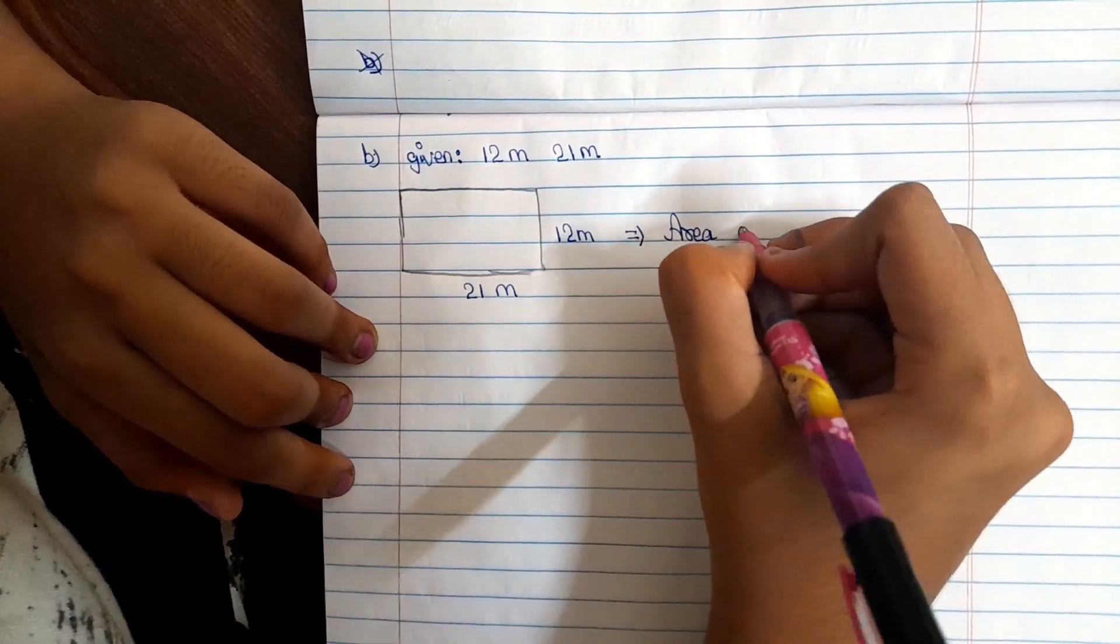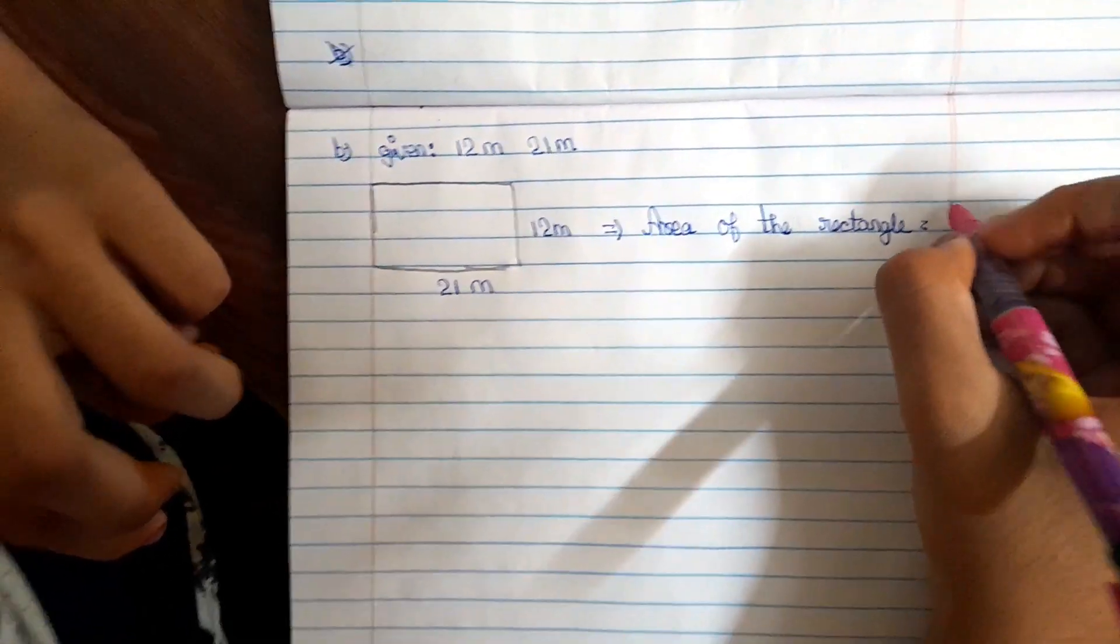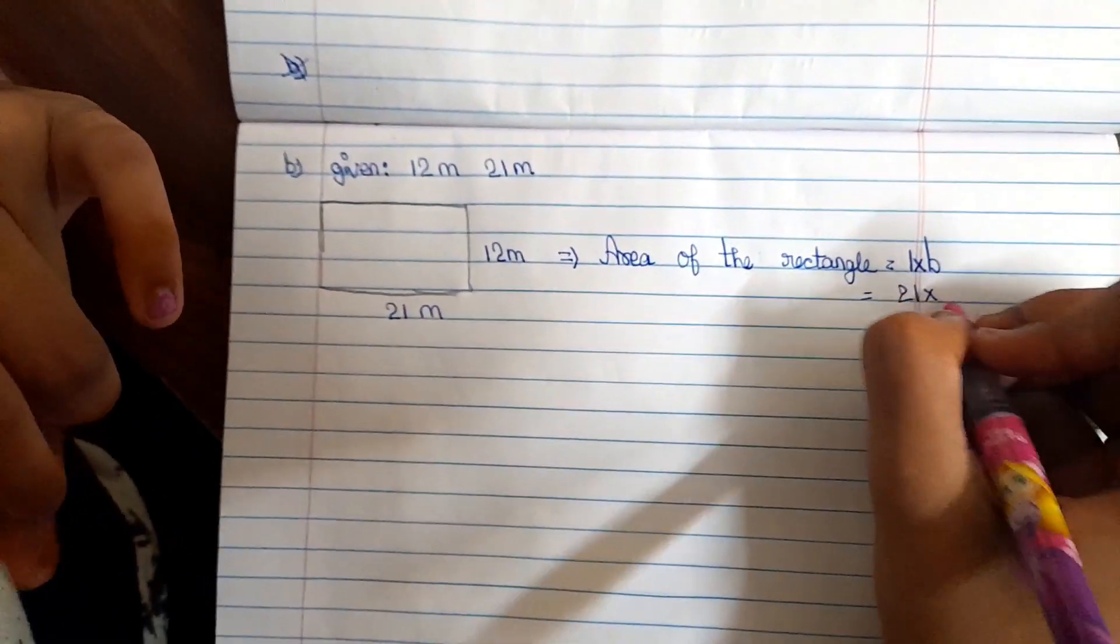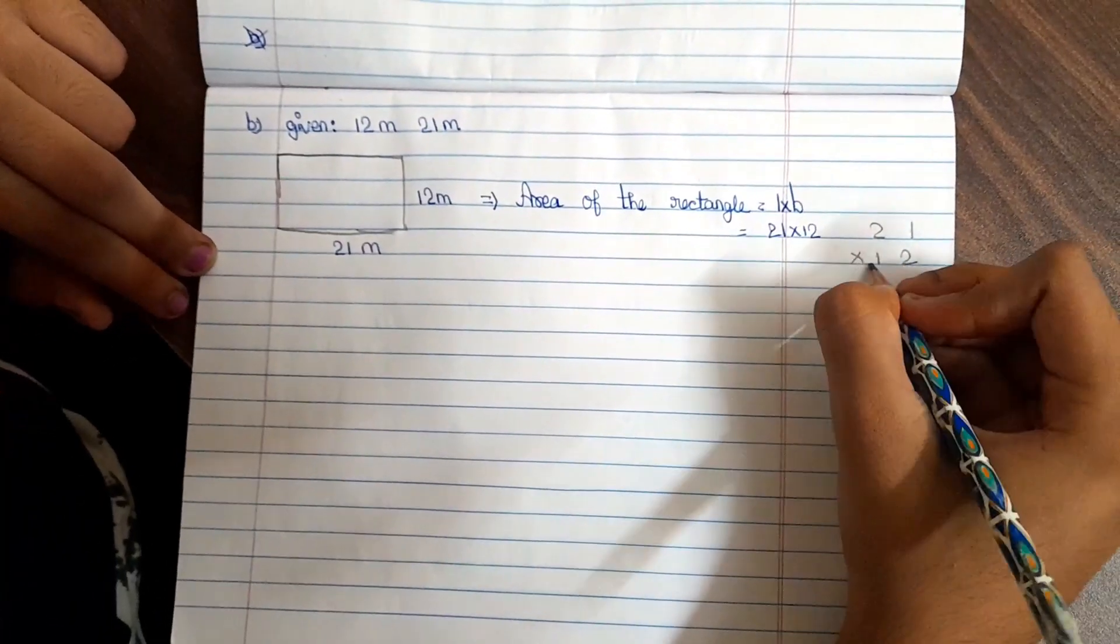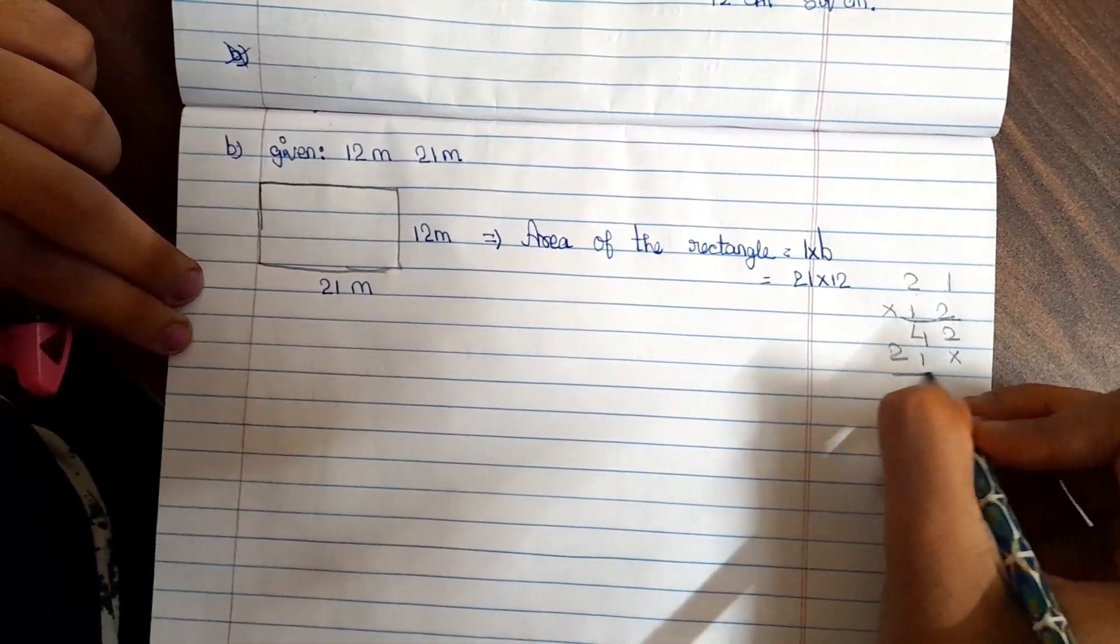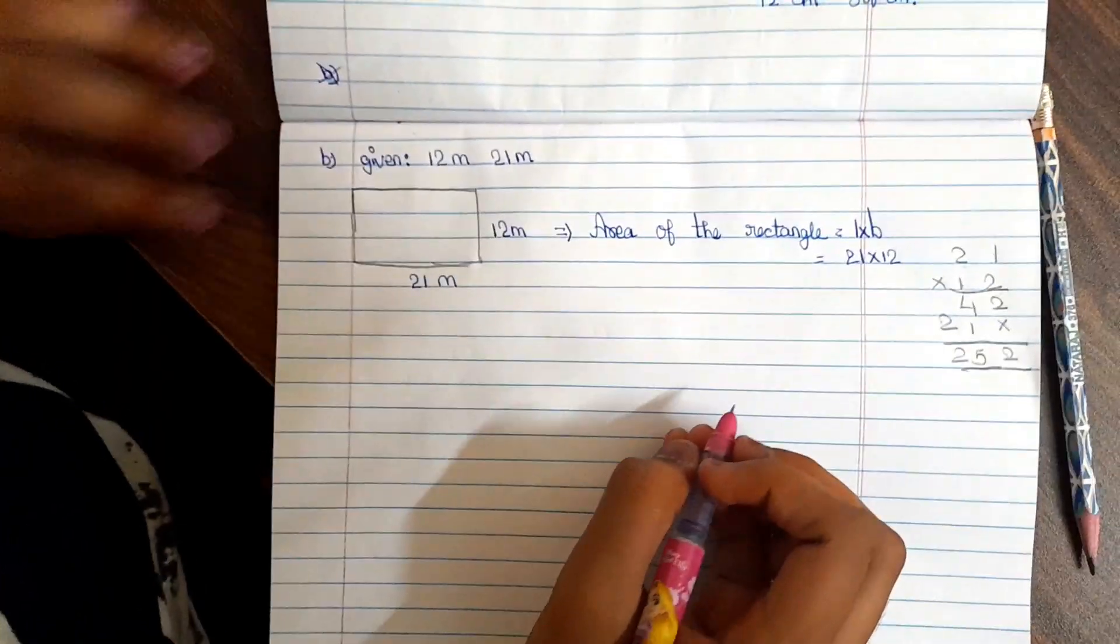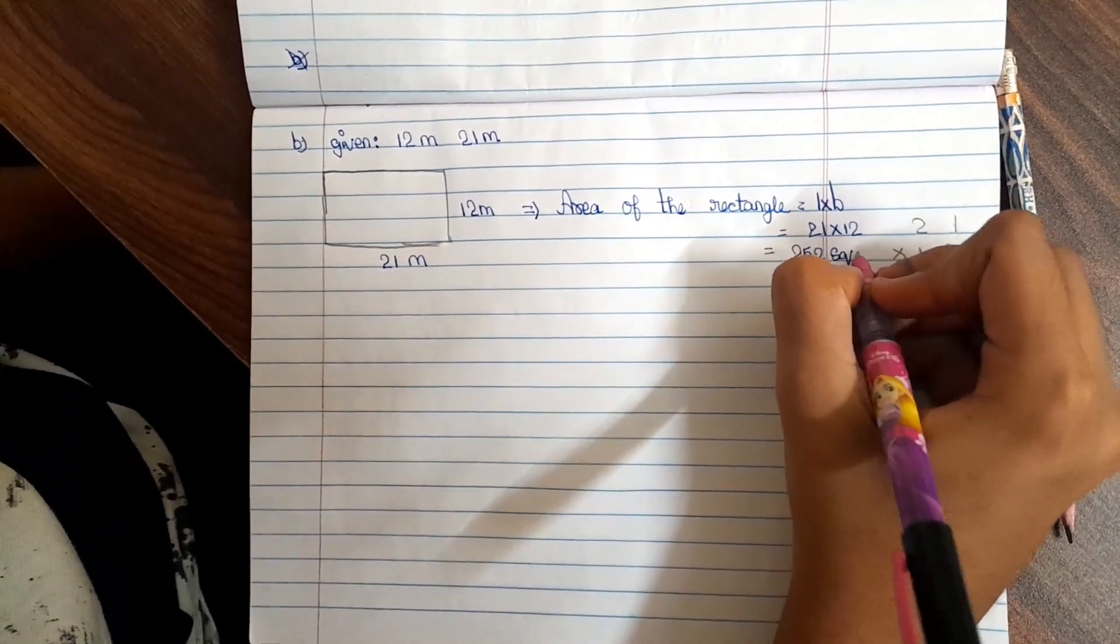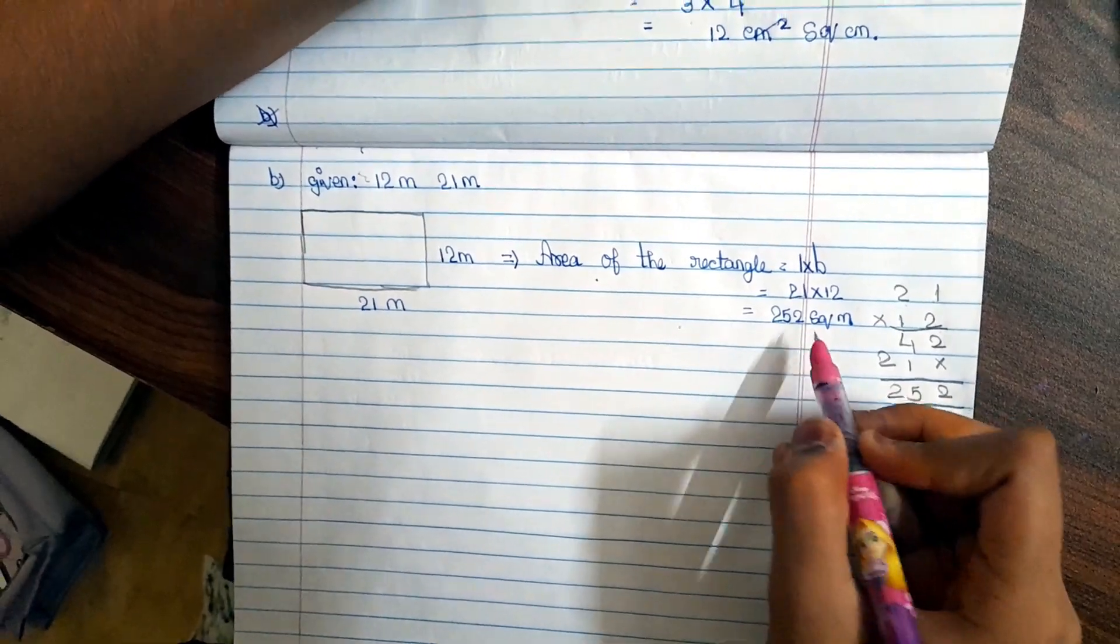Area of a rectangle. Area of a rectangle is L into B. So 21 into 12. Our answer is 252. We want to write 252 square meter. These two units are same. So we can put 252 square meter.